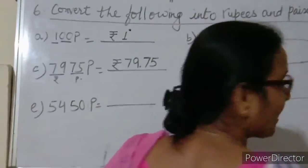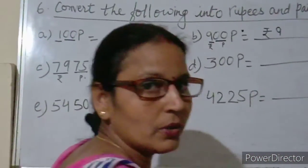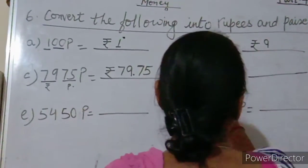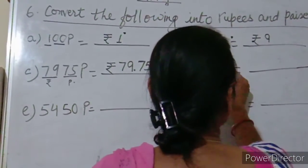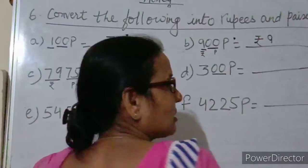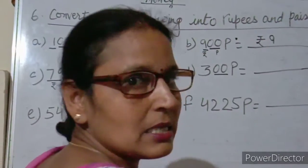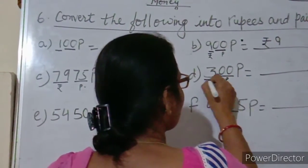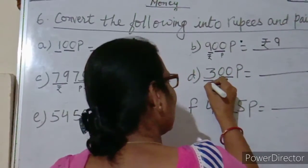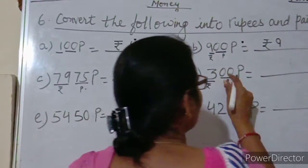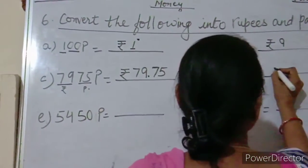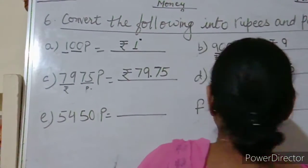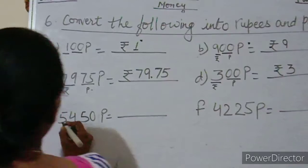Next is 300 paise. Again, two digits from the right as paise, and the rest of the digit as rupees. So 300 paise is equal to 3 rupees.